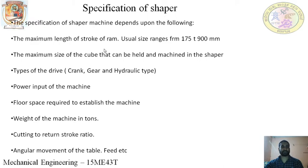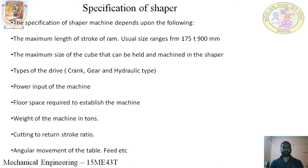Further classification of the shaper is based on maximum length of the stroke that can be held in the machine, type of drive, power input of the machine, floor space required to establish the machine, weight of the machine in tons, cutting to return ratio, and angular movement of the table. In a shaper, cutting action takes place during the forward stroke and the return stroke is idle. During the return stroke, the tool has to move at a faster rate compared to the forward stroke because no metal cutting takes place.